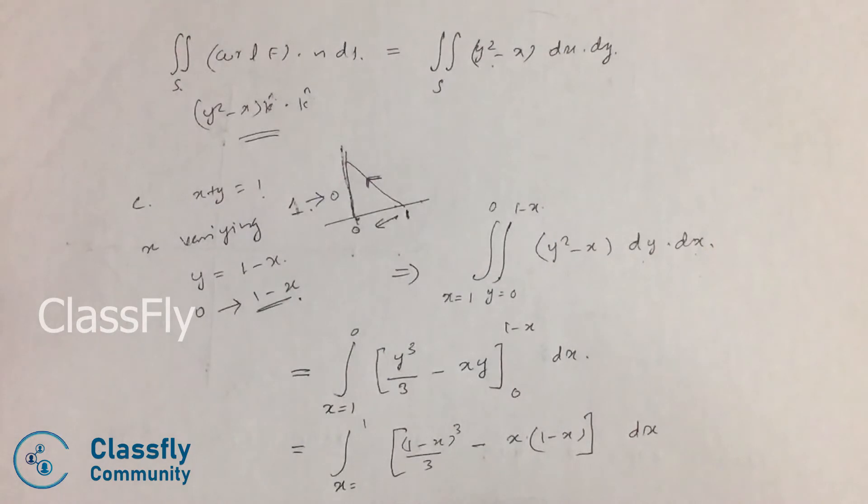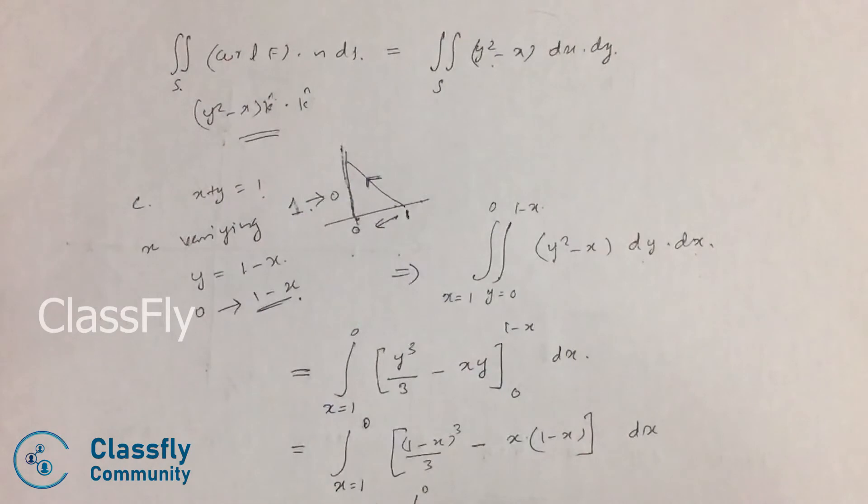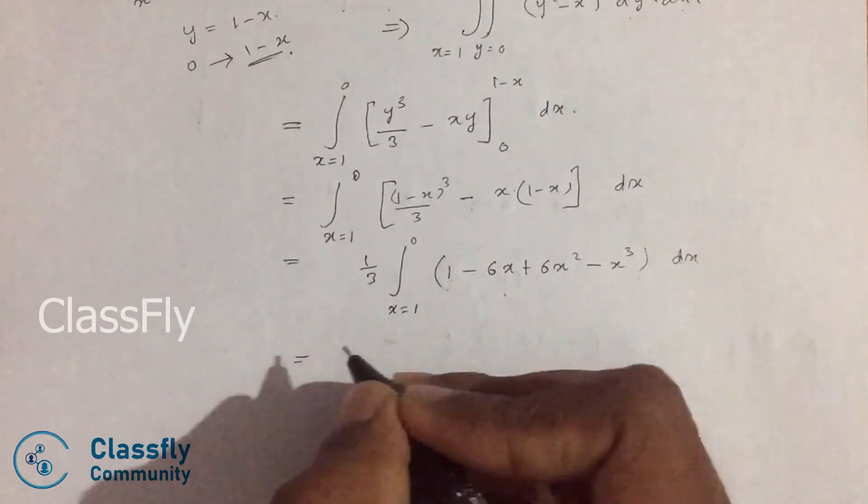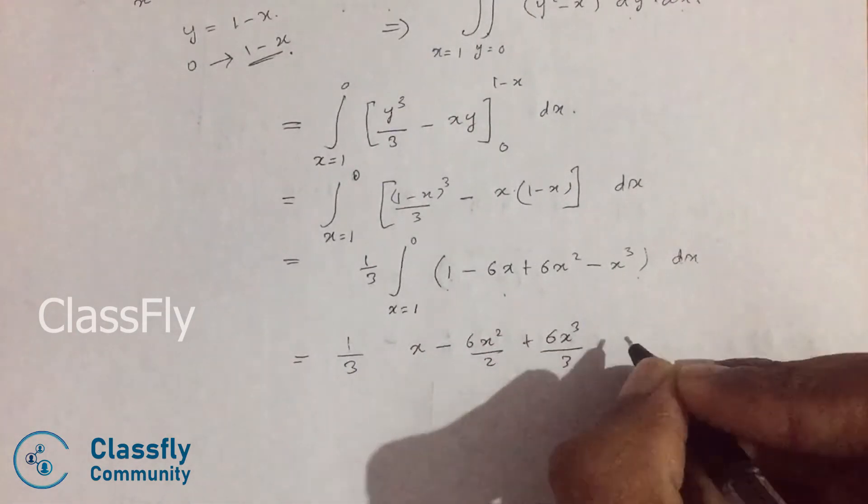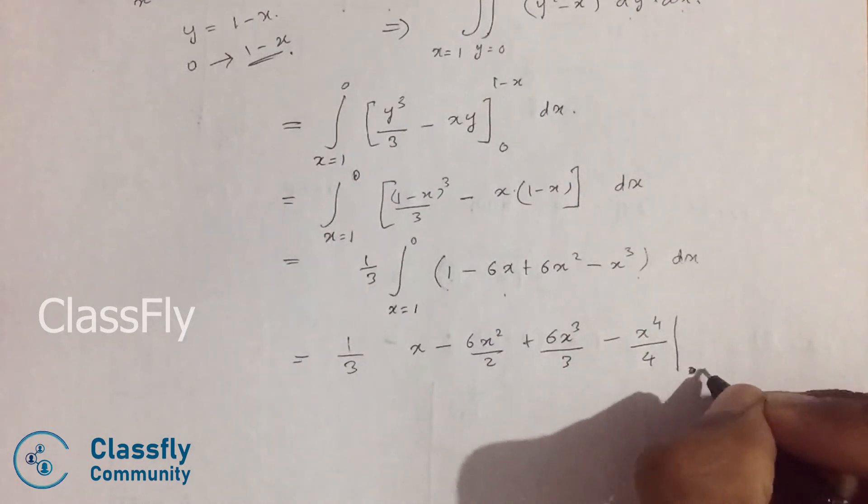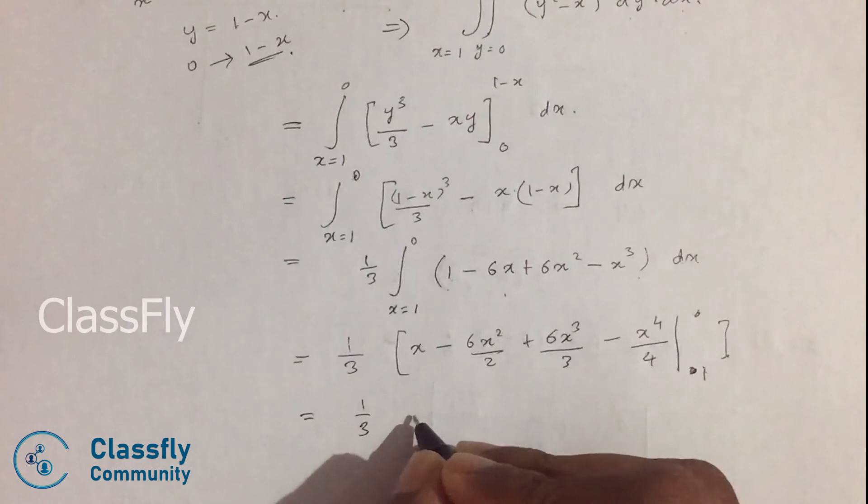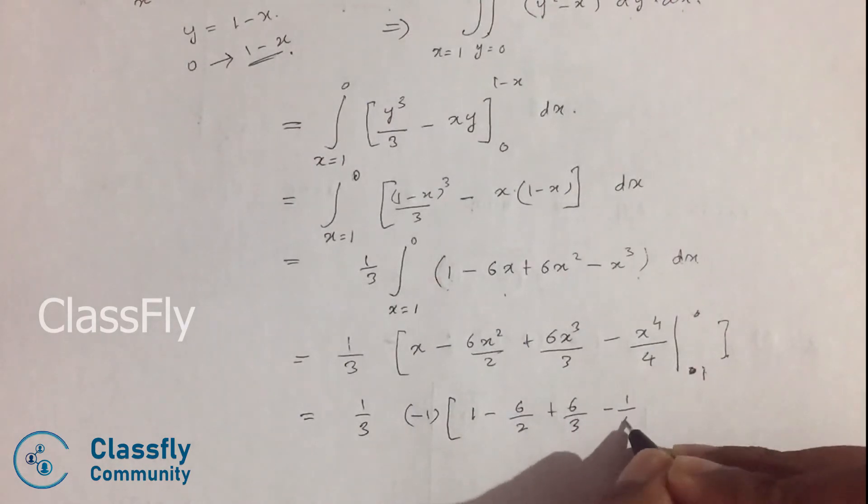Simplifying this we get 1 divided by 3, x equals 1 to 0, (1 minus 6x plus 6x squared minus x cubed) dx. Now we have to integrate this and apply the limits, which is equal to 1 divided by 3, [x minus 3x squared plus 2x cubed minus x to the 4 divided by 4] from 1 to 0. Now applying the limits, we get 1 divided by 3 times (1 minus 6 divided by 2 plus 6 divided by 3 minus 1 divided by 4).